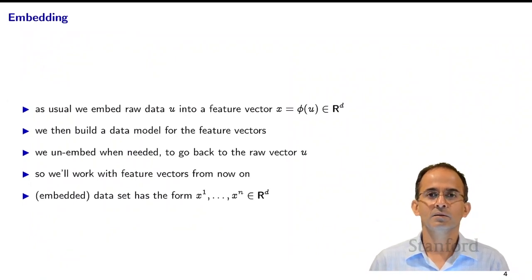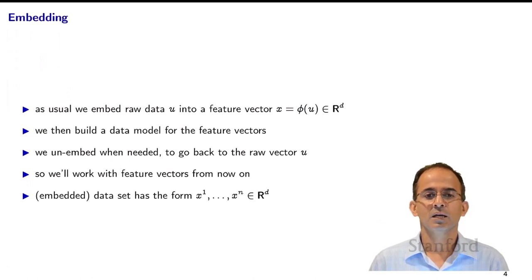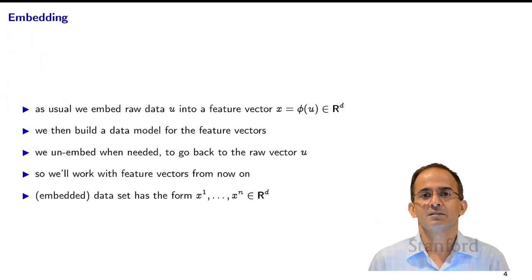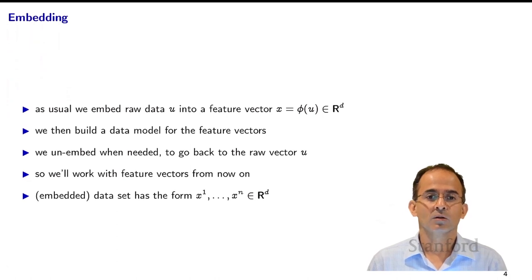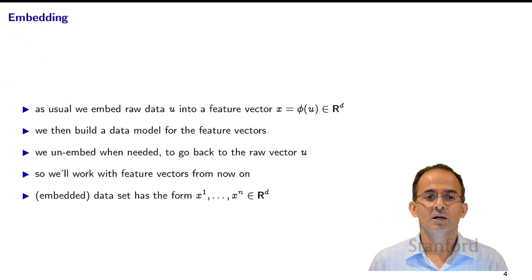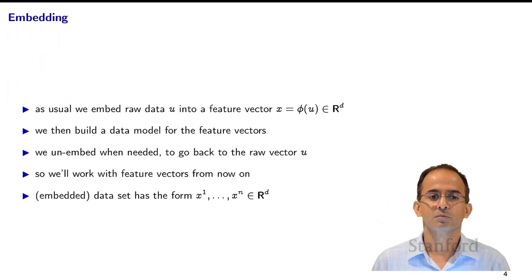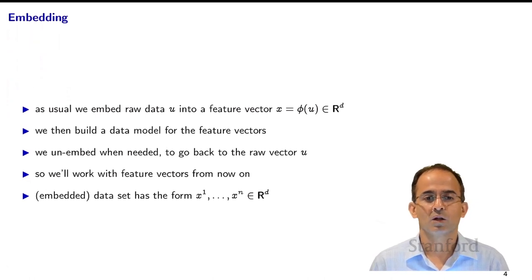Just as before, we work with embedded data. We take our data U and embed it into a feature vector X. X is Phi of U and lives in R^D. Then we build our data model for the vectors X, and when we need to, we un-embed to go back to the raw vector U. So from now on we'll work with feature vectors X — an embedded dataset X1 through Xn, each a vector in R^D.